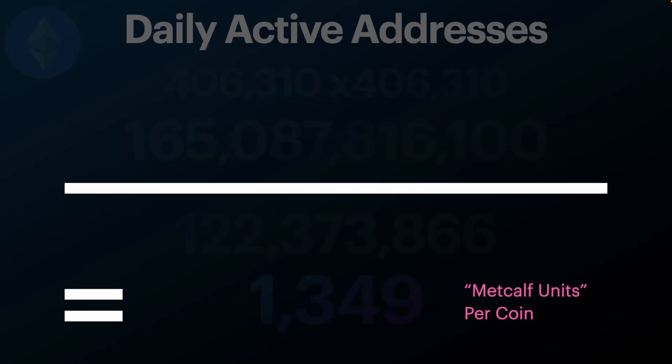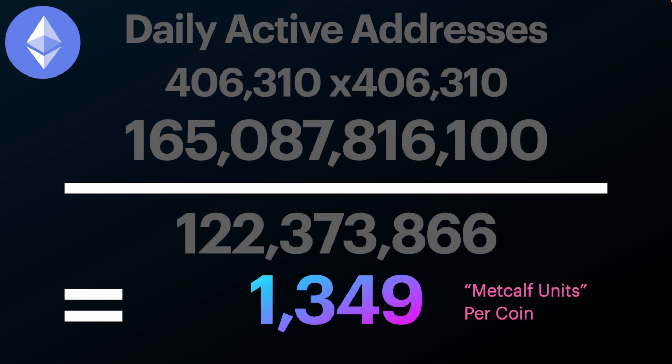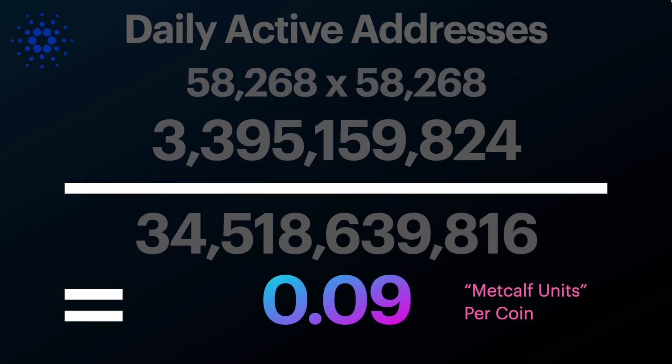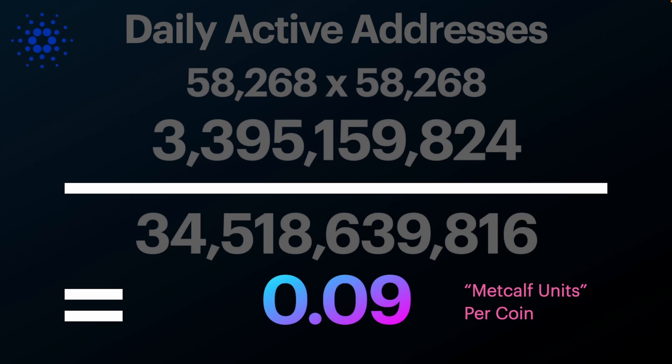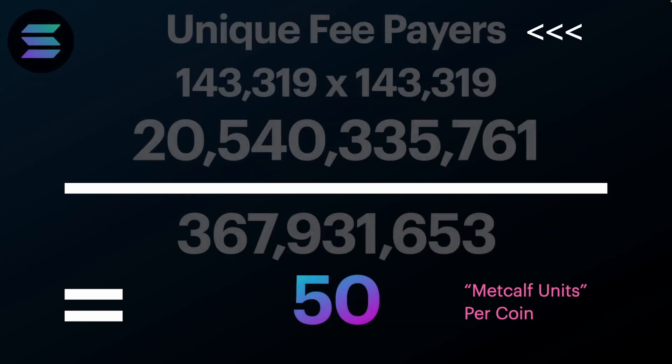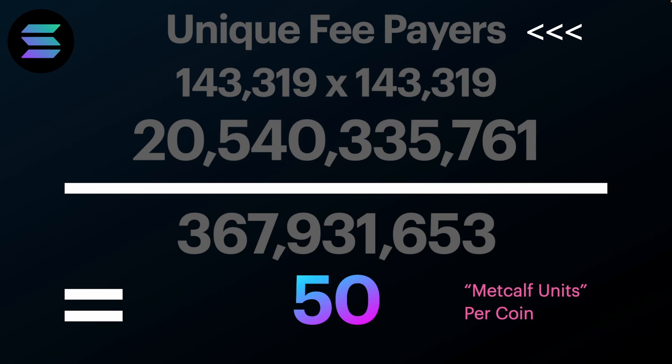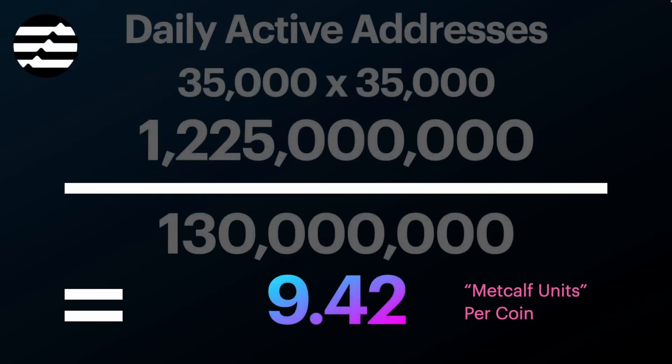This is very useful, but it is not our US dollar number. You could argue the circulating supply is lower because of lost accounts, but I would say that counts against the integrity of the network and it all washes out. We can also do this for other coins: Ethereum comes to 1,349 Metcalf units; Cardano comes to 0.09 Metcalf units; Solana comes to 50 Metcalf units; and Aptos comes to 9.42 Metcalf units per coin.